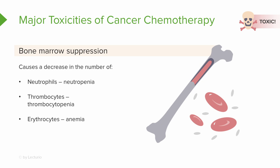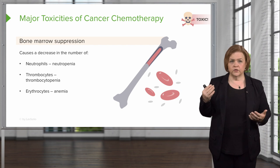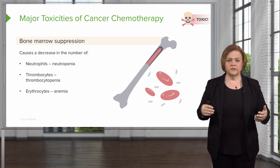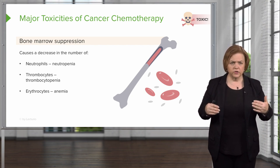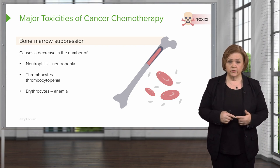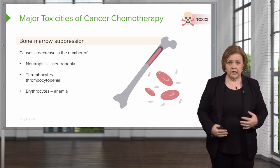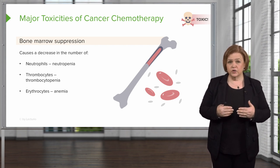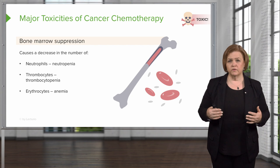Their immune system is not normal. Because of thrombocytopenia, you might see questions about what to teach about shaving — you want them to use an electric razor. They may notice extra bruising and want to pay attention to that. For low erythrocytes — low red cells — I know they're going to be really tired because they don't have enough oxygen-carrying ability in their body. So I'm going to help them conserve energy and pick what's most important for them to do.